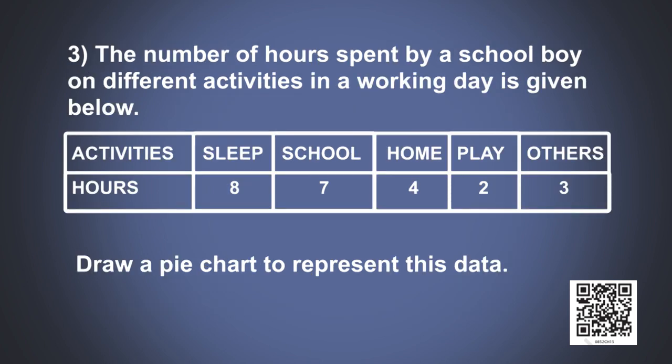Problem number 3. The number of hours spent by a school boy on different activities in a working day is given below: sleep 8 hours, school 7 hours, home 4 hours, play 2 hours, and other activities 3 hours. Draw a pie chart to represent this data.